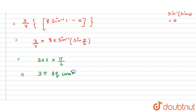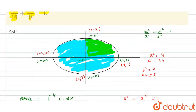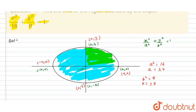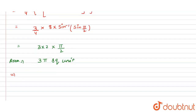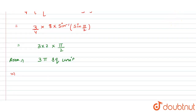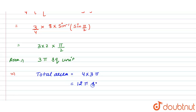Now we have to find the total area. Since the ellipse has 4 symmetric parts, we multiply the one-quadrant area by 4. Total area = 4 × 3π = 12π square units. This is the area of the given ellipse: 12π square units.